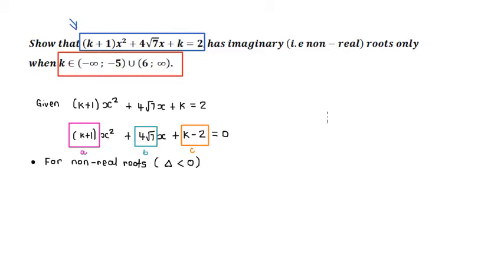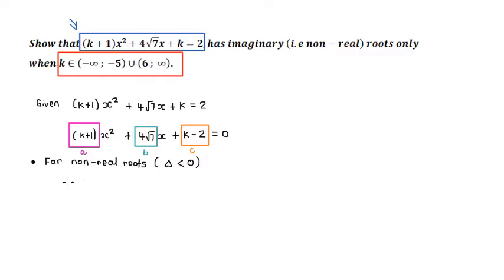Just to remind you, what we were really focusing on was identifying the components in the general quadratic expression AX squared plus BX plus C. Moving on, we are now going to write out the discriminant. You can start by writing the equation of the discriminant — that's also fine. And we want to set it less than zero because we're looking for non-real roots.